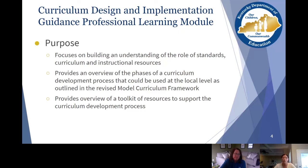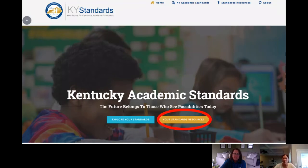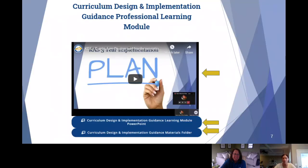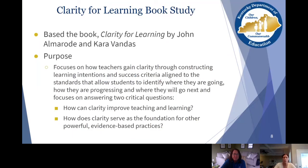It provides an overview of the phases of a curriculum development process to translate standards into a guaranteed and viable curriculum, mimicking the process outlined in the new revised model curriculum framework released in March. It also provides an overview of the toolkit of resources to support that curriculum development process. To access it, go to kystandards.org, click on your standard resources, click on professional learning modules, and scroll down to find three components: the recorded video, a link to the PowerPoint, and a link to the Google folder with all materials.